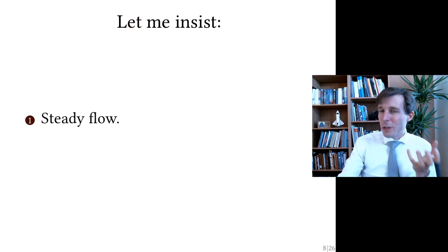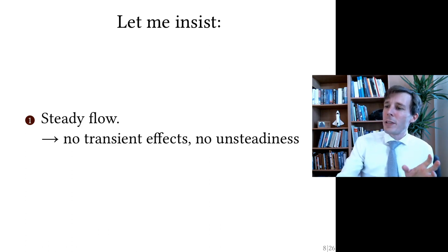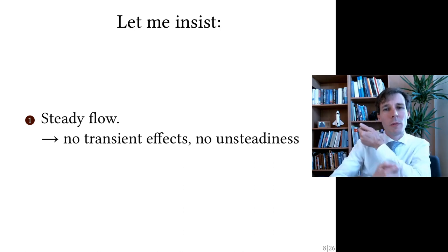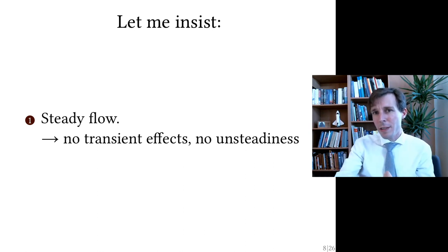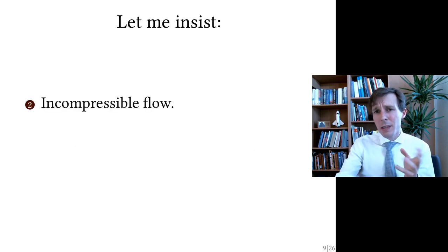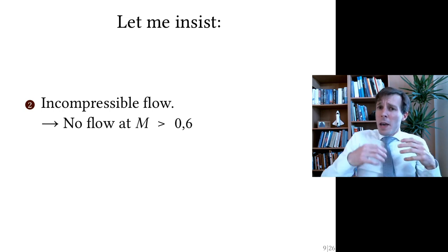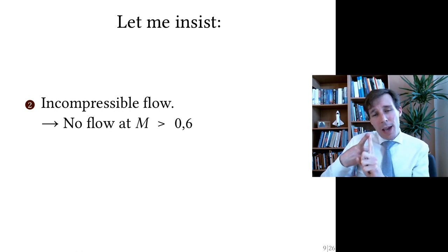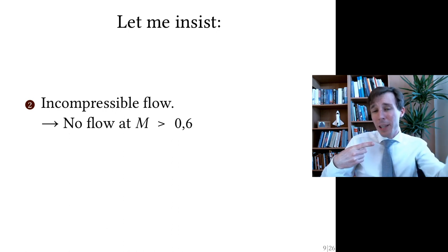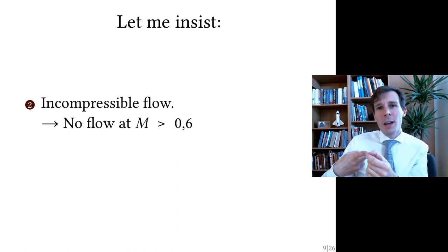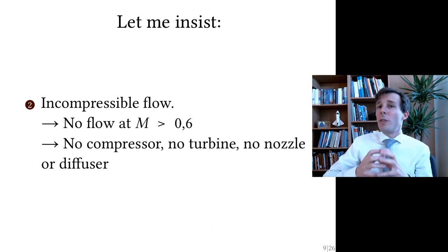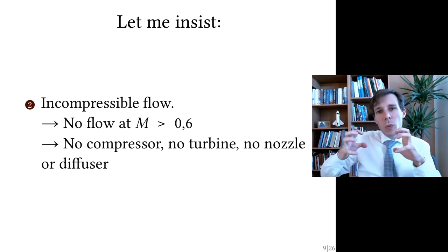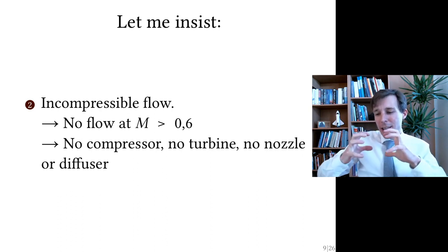The first restriction of steady flow is okay — it prevents you from studying flow in veins inside the human body where the heart pumps and creates unsteadiness, but that's still fair enough. The second restriction is incompressible flow. You cannot go extremely fast — no high Mach numbers like Mach 0.5 or 0.6, so in air you're limited to roughly 500 kilometers per hour. But you also cannot have any compressor, turbine, diffuser, nozzle, or rocket engine — nothing where the fluid stores or expands energy through internal compression.